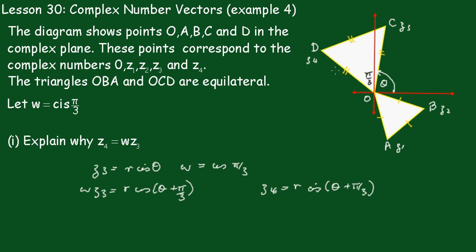Because R would be the same because we have this R here and of course this R here because it's an equilateral triangle. So therefore, finally we see that Z4 must be equal to W times Z3.